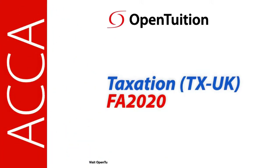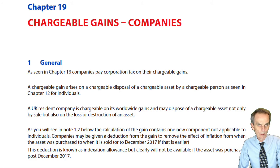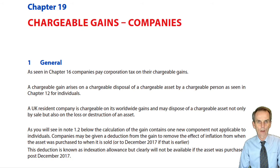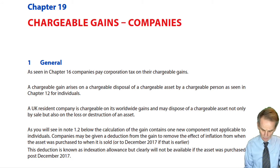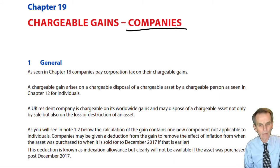This is a lecture from OpenTuition. To benefit from the lecture, you should download the free lecture notes from OpenTuition.com. In Chapter 19, we turn our attention back to the taxation of chargeable gains — only this time, we're dealing with the taxation of those chargeable gains on companies, not on individuals.